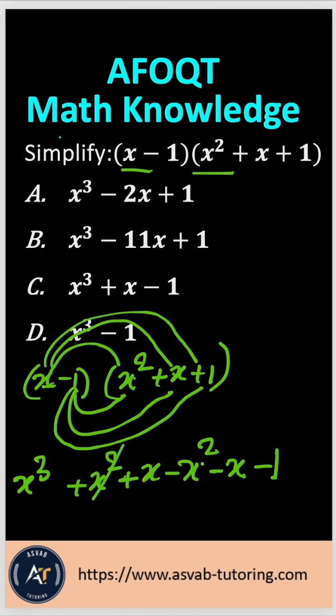Now you could see here, cancel out, cancel out. This, this, cancel. So that gives you x to the third power minus 1. With that, the correct answer is option D.